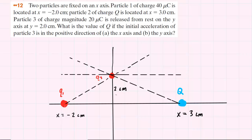We've gone ahead and drawn the picture based on the description given in the question. It turns out that it's going to be useful for us to find an expression for this angle here, which we can call theta 1. And we're also going to want to find an expression for this angle here, which we'll call theta 2.